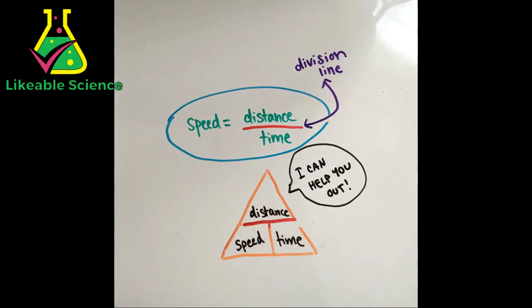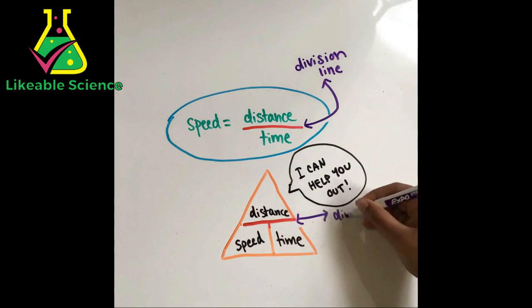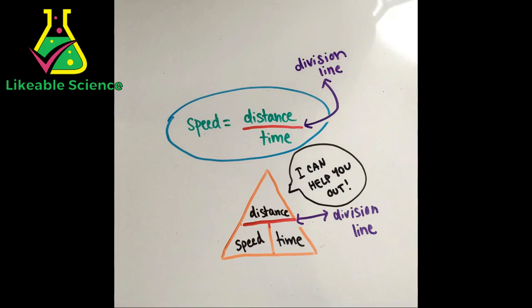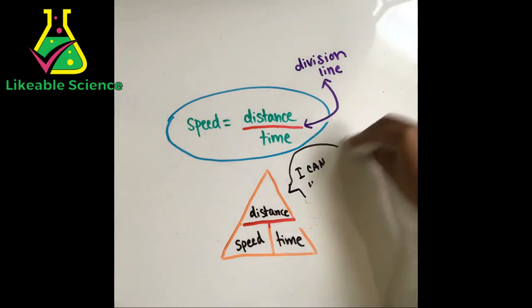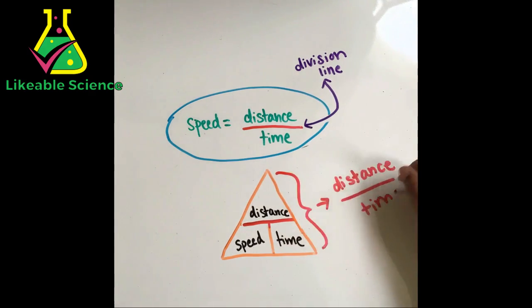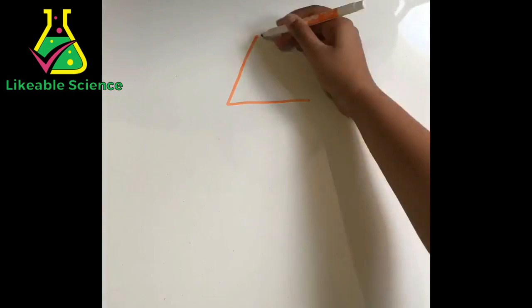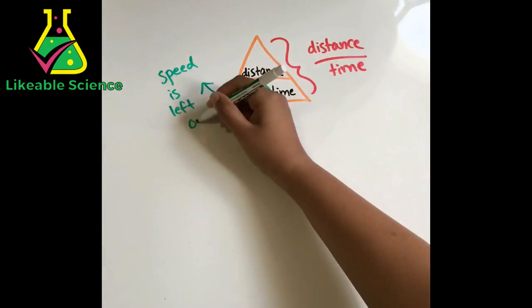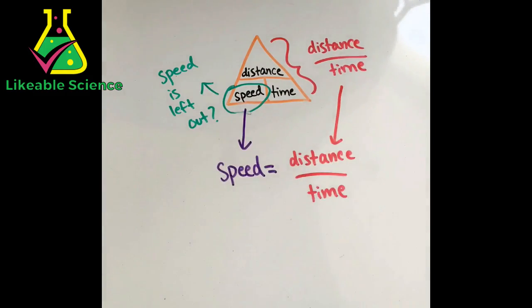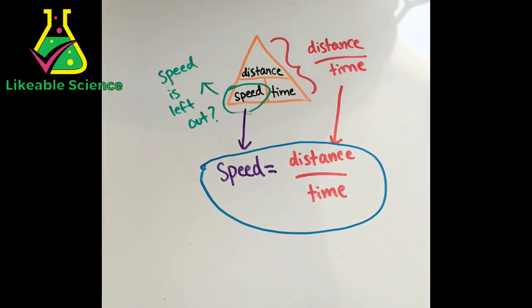There is a division line in the equation that resembles the division line in the triangle separating distance from time. Since distance is on top of time, it would translate to distance divided by time. The only thing left out in this equation is the word speed. So we put that as the result of the equation: speed equals distance over time.